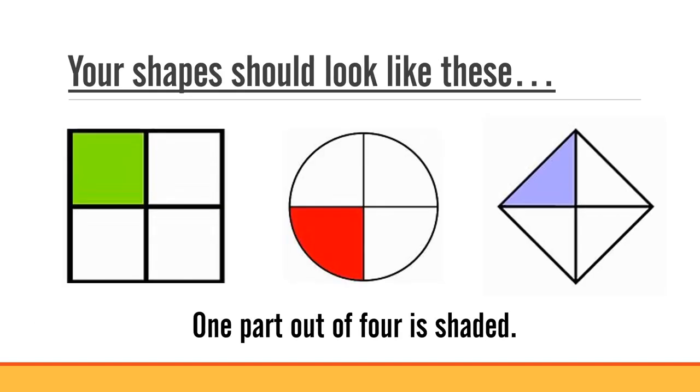Your shape should look something like this. Here a quarter of the square is shaded in green, a quarter of the circle is shaded in red and a quarter of the diamond is shaded in blue. So one part out of four is shaded. Did you get your answers correct?